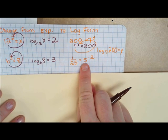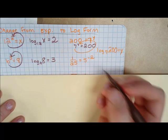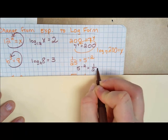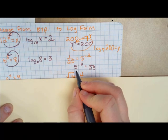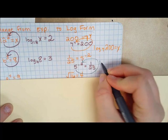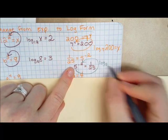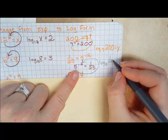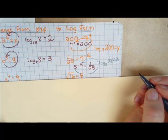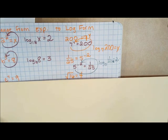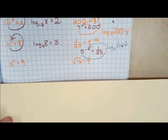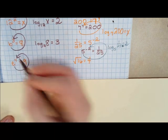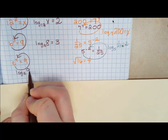Next: B to the third equals 8. It already has the base and exponent on the left side, so we can loop around — log base B of 8 equals 3. Next: 1 over 25 equals 5 raised to the negative 2. Rewrite it: 5 raised to the negative 2 equals 1 over 25. Start at the base, loop around — log base 5 of 1 over 25 equals negative 2. Then: e to the Y equals 9, so log base e of 9 equals Y.